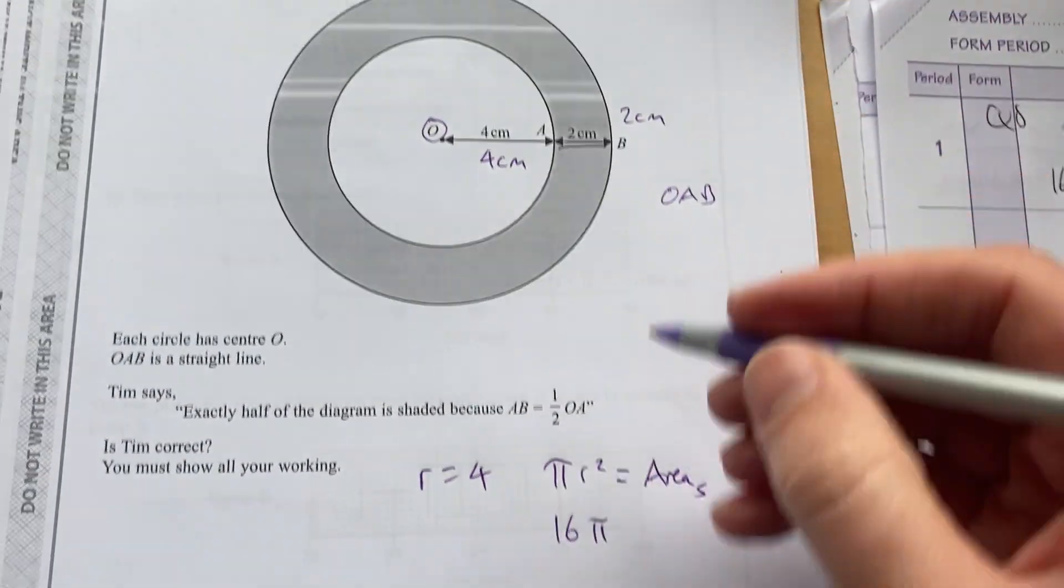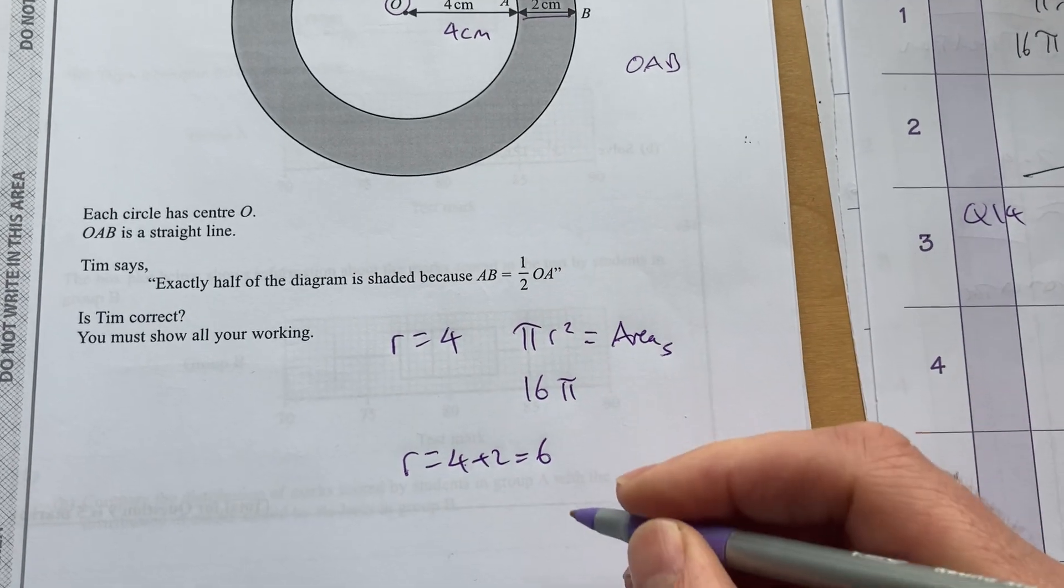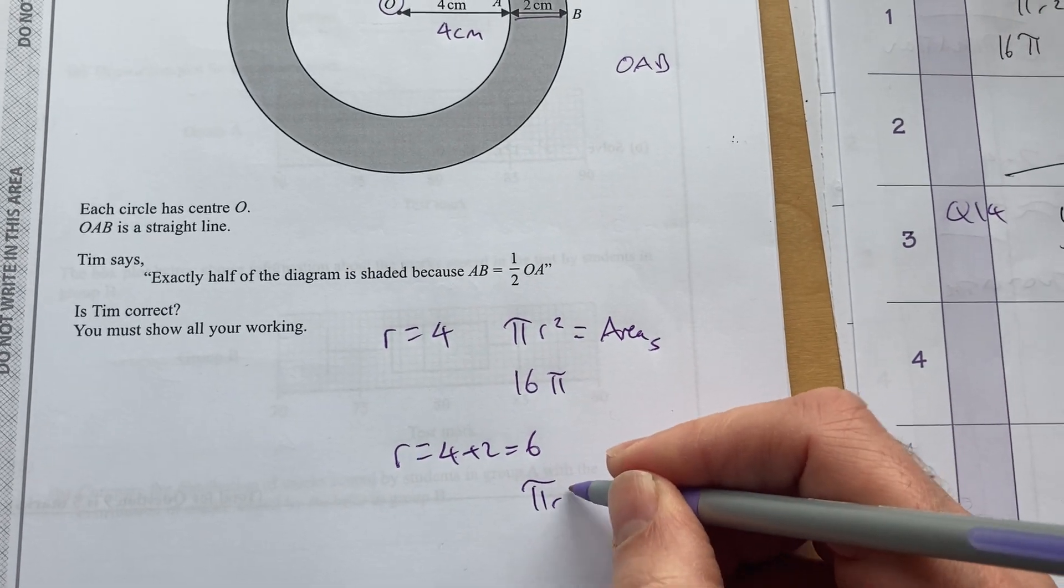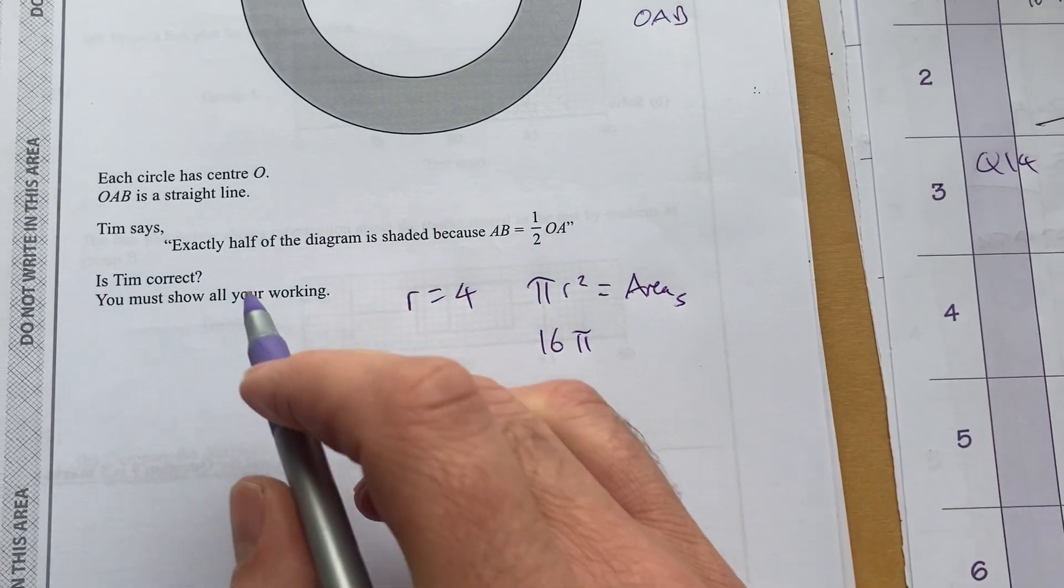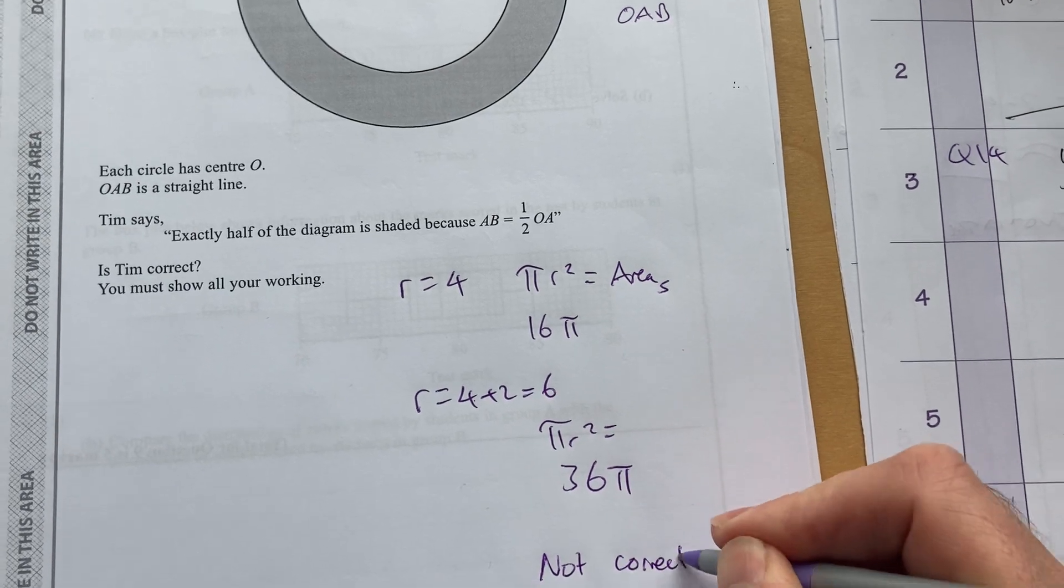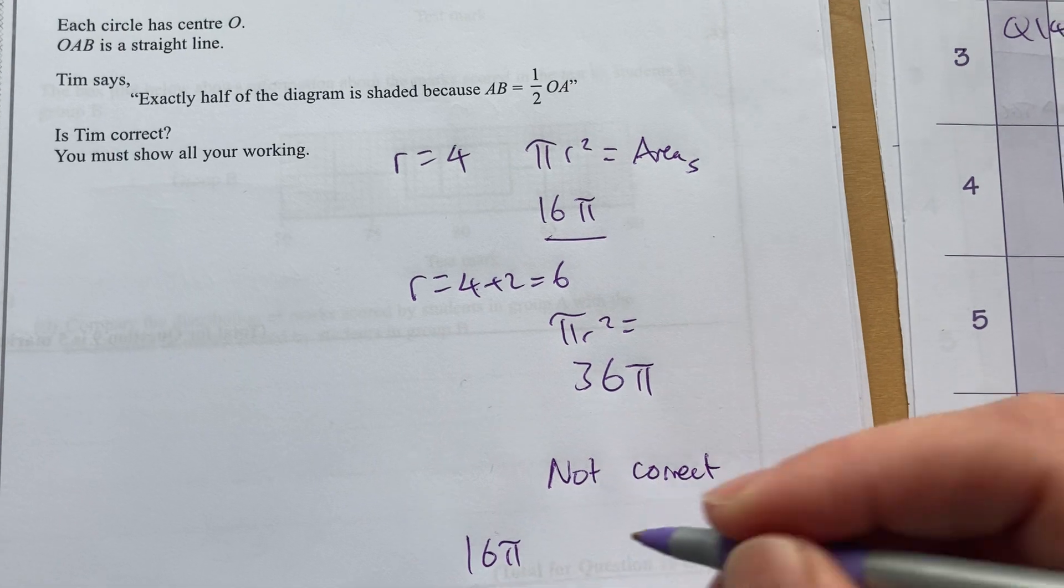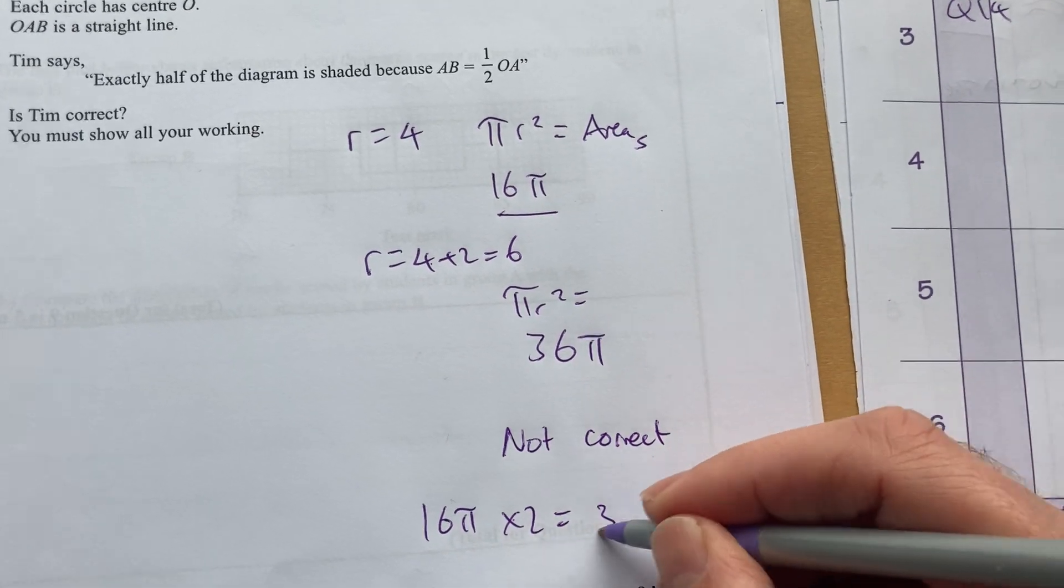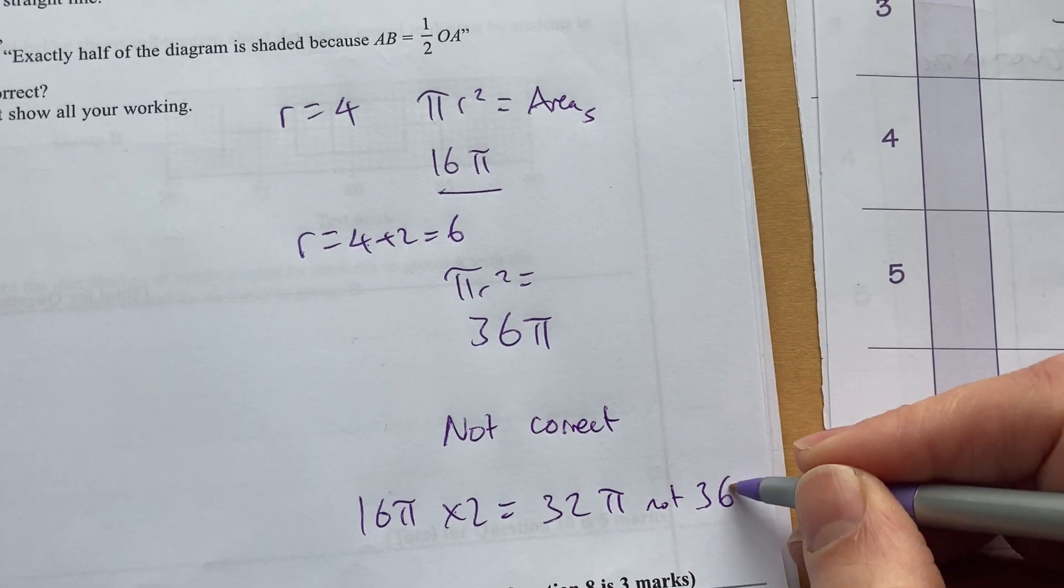The larger one now has a radius of four plus two, which is six. So pi R squared will equal 36 pi. So I'll say that Tim is not correct because 16 pi times two would be 32 pi and not 36 pi.